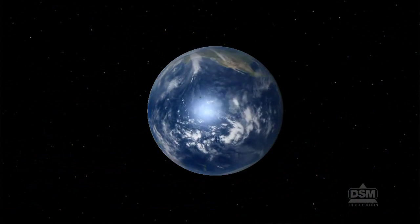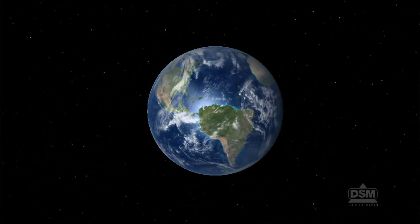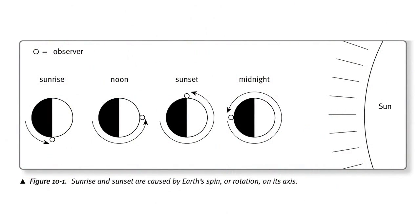Tell students that Earth is constantly turning round and round, like a top spinning. We don't feel the movement because we are moving along with Earth. Explain that the turning of the Earth causes sunrise and sunset.